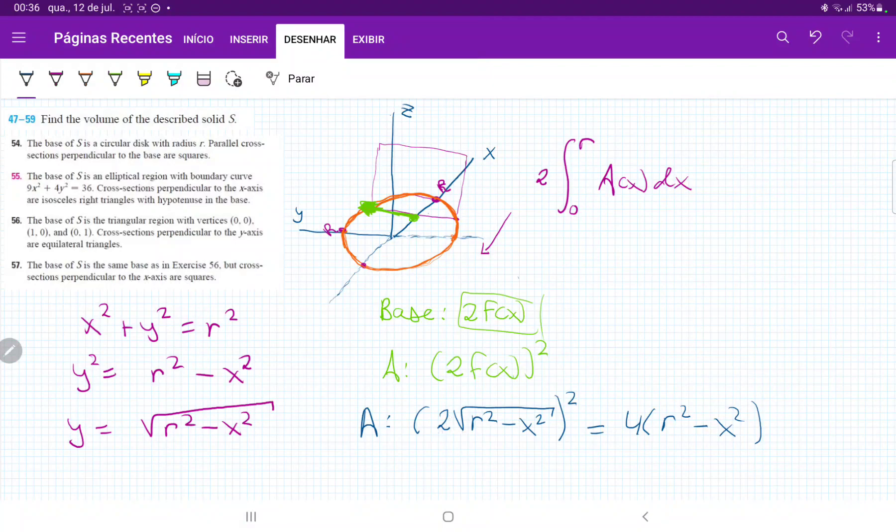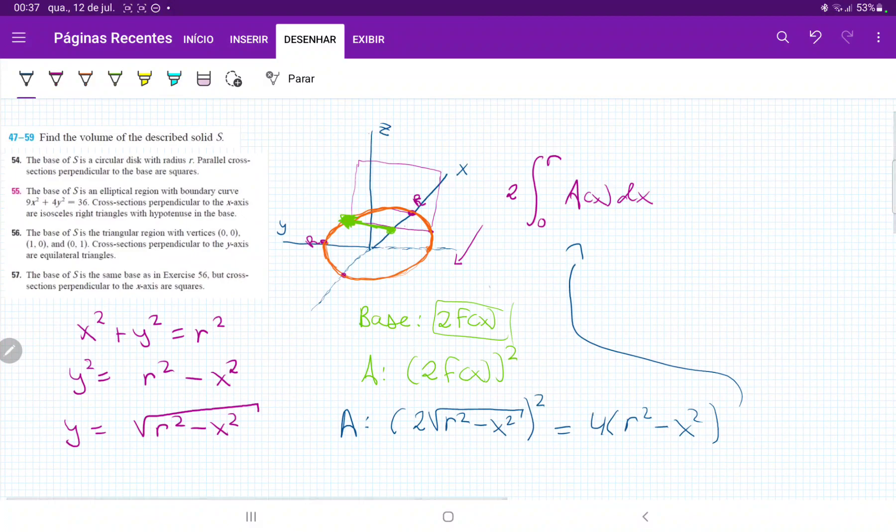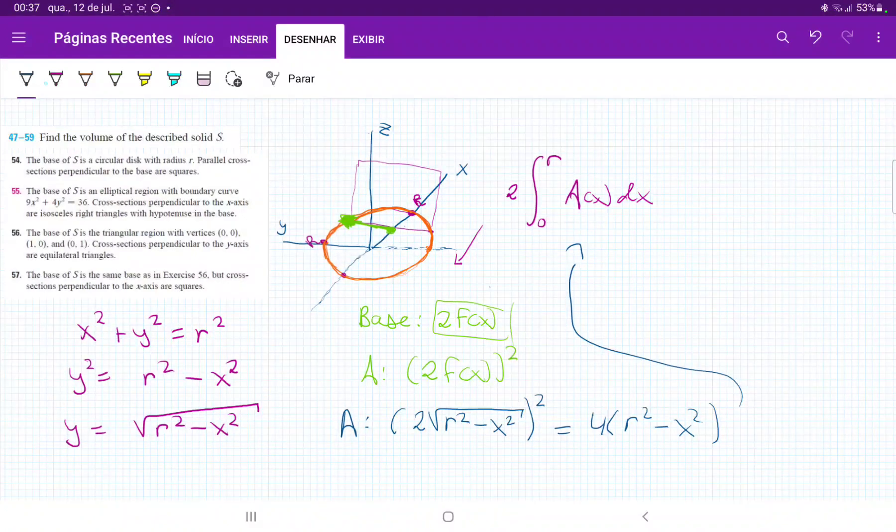Once we have the area, we're ready to put this back into our integral. Remember that we're summing up the squares, twice the sum from 0 all the way up to r.